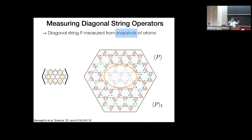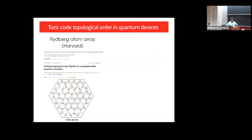The off-diagonal loop is also important — it tells you you're not just seeing an incoherent superposition of dimer configurations. In experiment you get just the snapshot data and you don't know: is it a coherent wave function with all these different patterns superposed, or just a decoherent mixture? By looking at the diagonal loops, you only know you're in the right configuration space. The off-diagonal loops give information about the quantum superposition. This experiment was done with the group of Lukin at Harvard.